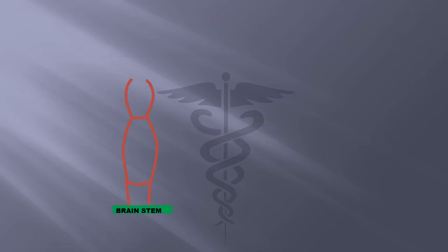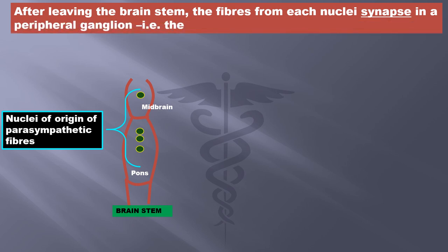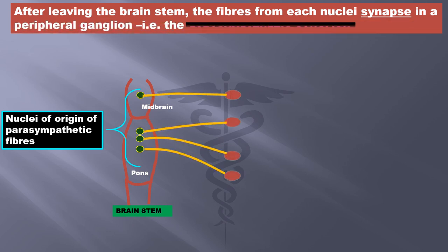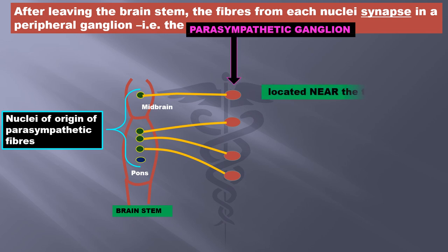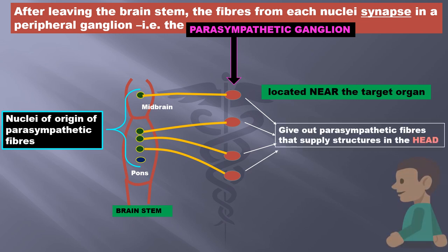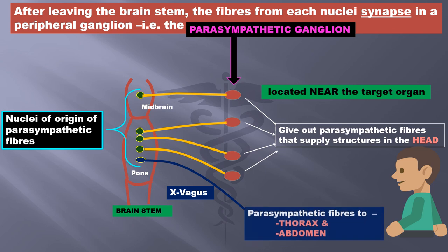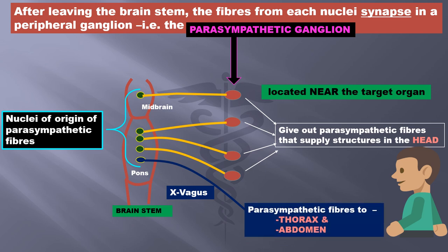Let us look at the brain stem once again: midbrain, pons — these are the nuclei of origin of the parasympathetic nerves. After leaving the brain stem, the fibers from each nucleus synapse in a peripheral ganglion, and that is the parasympathetic ganglion. These are located near the target organ and give out parasympathetic fibers that supply structures in our head. At the bottom of this diagram you can see the nucleus associated with the vagus nerve, which supplies parasympathetic fibers to the thorax and the abdomen.